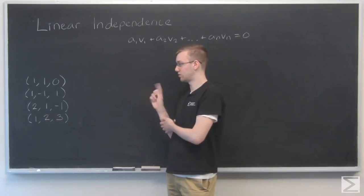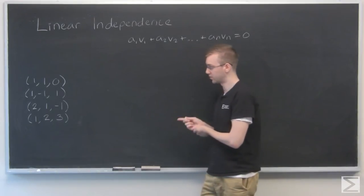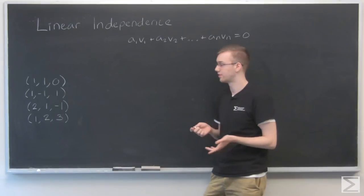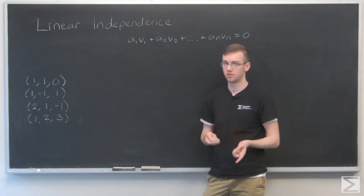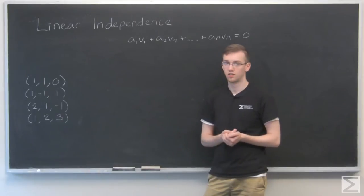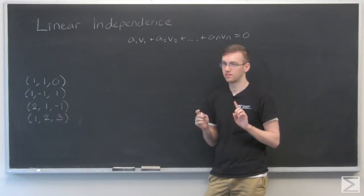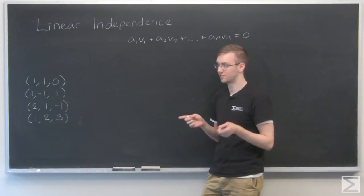Here I have four vectors and I want to see if they are linearly independent. That's one one zero, one minus one one, two one minus one, and one two three. Okay. To start out with, I have four vectors and each vector is in R3. There are three components. So something's going to be up and I'm going to tell you what.